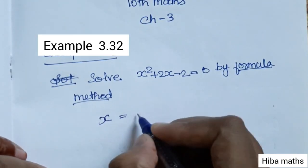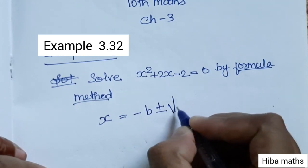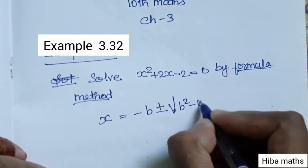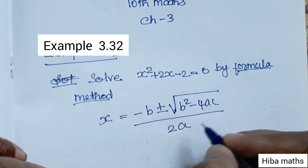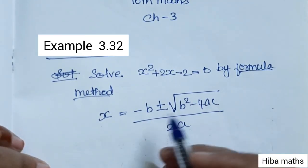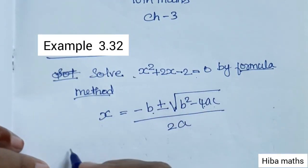We will write x equals minus b plus or minus root of b square minus 4ac by 2a. This is the formula. With this formula, we will solve the equation.